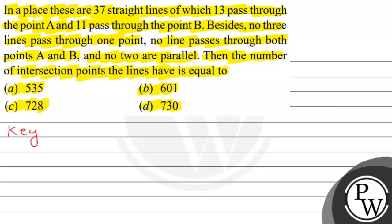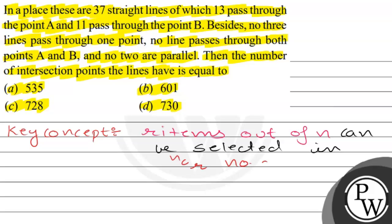Firstly, I will tell you a key concept that will help you to solve this. The concept is: r items out of n can be selected in nCr number of ways.